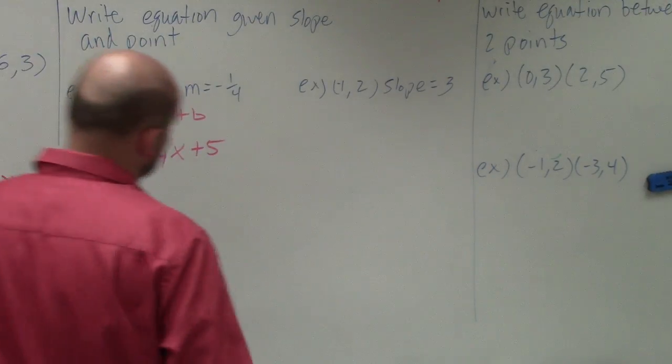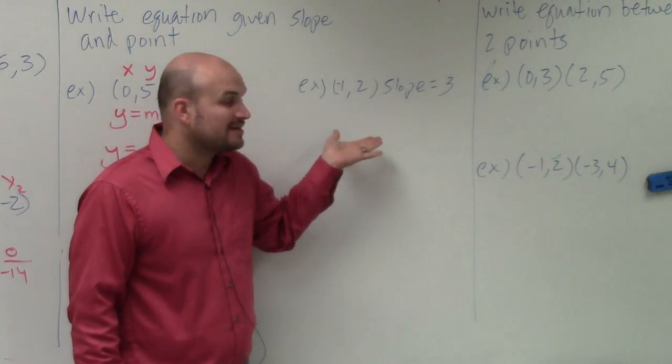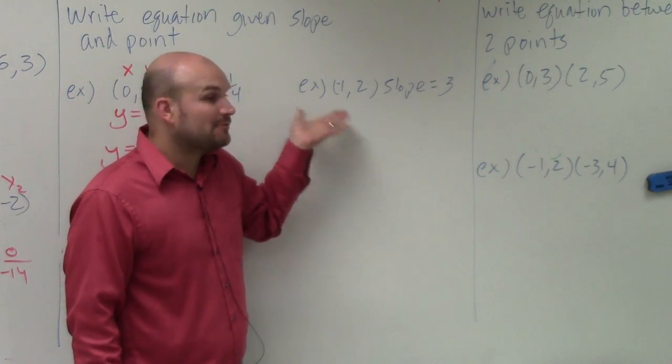Now, that's given us a point where negative 1, 2, where it's not given in. Now we're given the slope, and we're given a point.